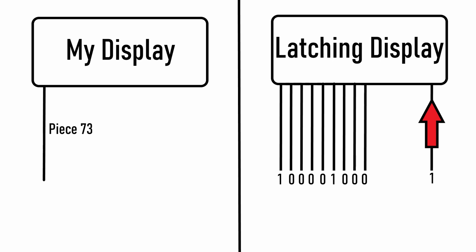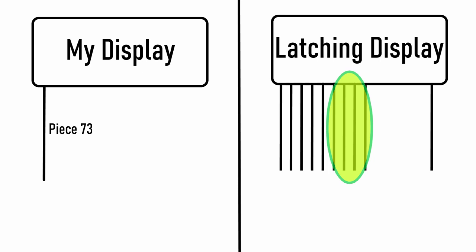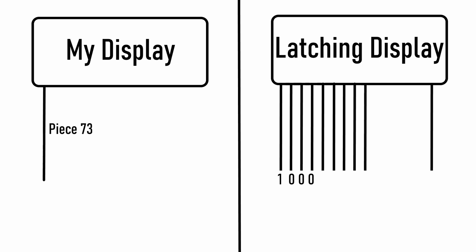Four lines are for the local board selection. Each display is given an identification number, which is converted into binary and used as an input. Four lines are for piece selection. Similarly, each piece in a local board is given an identification number, which is used as an input. Then there is one more input — an X or O bit is used to draw either an X or an O. We never specified whether to use small pieces or big pieces, but we can code this data in the piece selection, since there are seven unused states. We can also add a reset code to erase an entire local board.